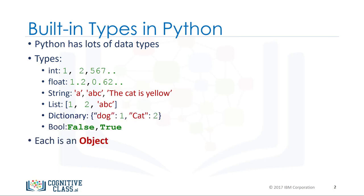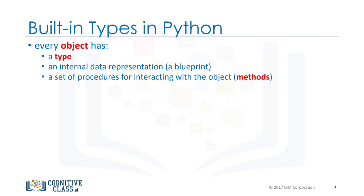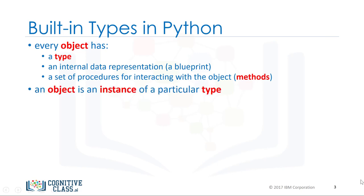In Python, each is an object. Every object has the following: a type, an internal representation, a set of functions called methods to interact with the data. An object is an instance of a particular type.